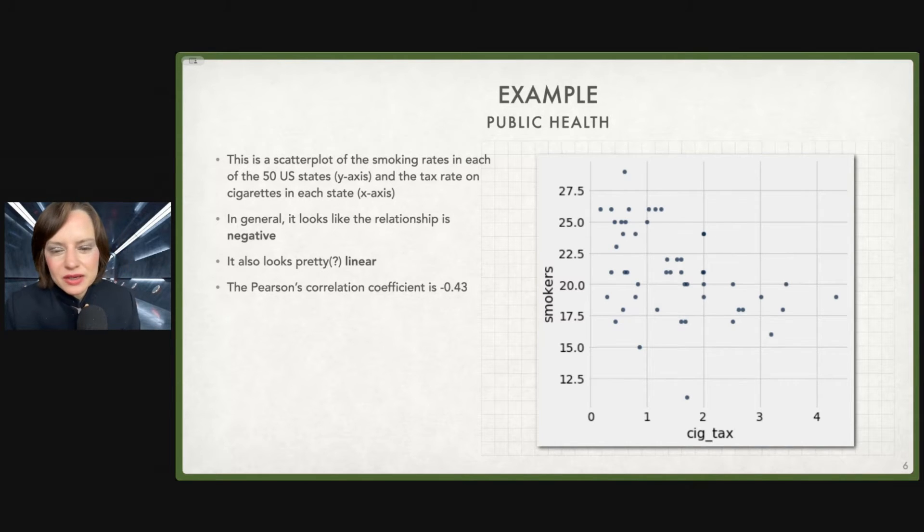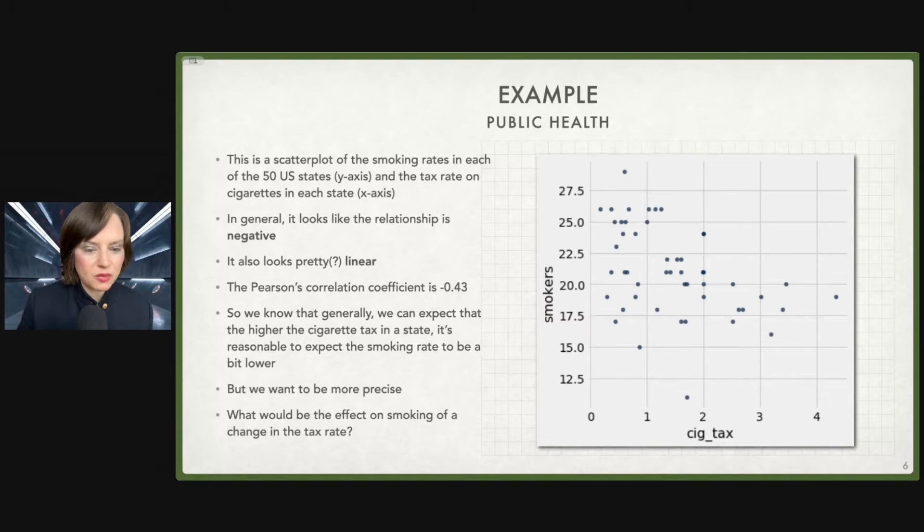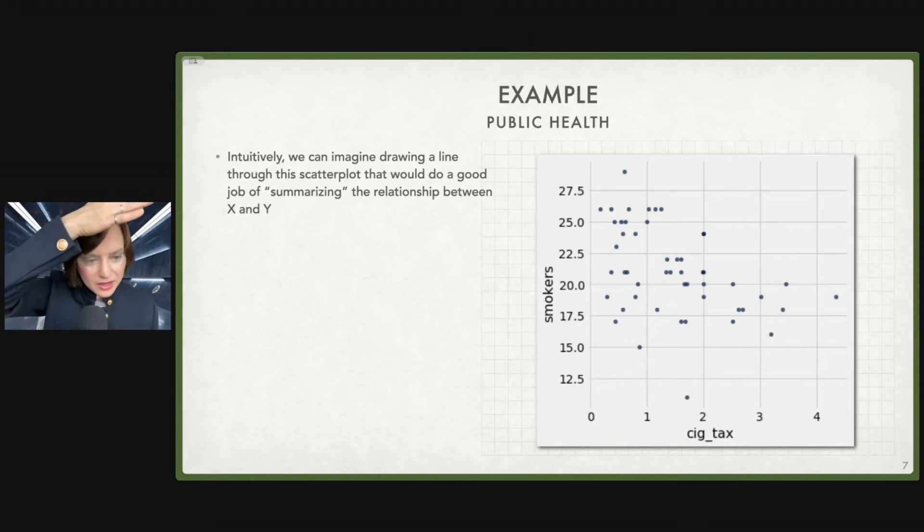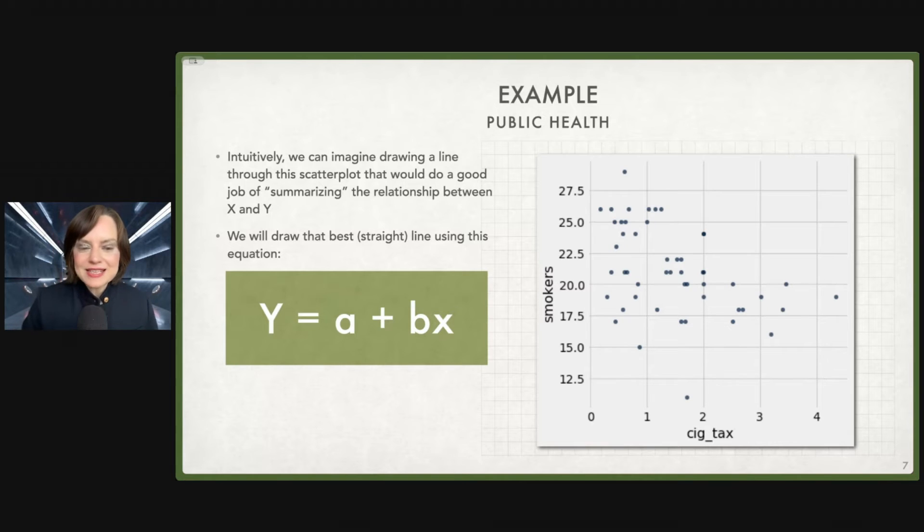So it looks pretty linear. It's not the strongest relationship I've ever seen. The Pearson's correlation coefficient is minus 0.43. So what do we know so far? We know that generally, we can expect that the higher the cigarette tax is in a state, the lower the smoking rate is going to be. But we want to be more precise. Perhaps we are working in the government and we say, I want to change the tax rate on cigarettes. What would be the effect on smoking of a change in that tax rate? We could draw a line through this scatter plot that would summarize the relationship between X and Y. We're working in linear regression, so it is going to be a straight line, and we're going to do so using this equation.